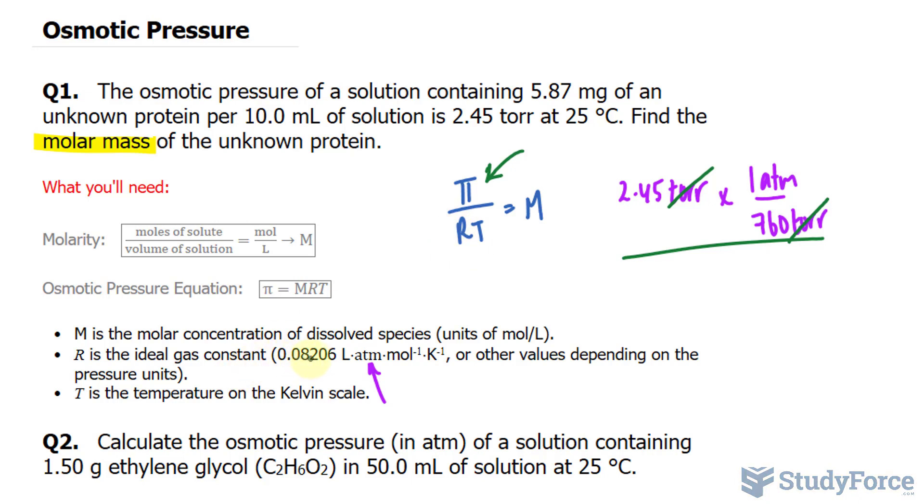r is 0.08206. You see this power of negative 1, that means we take the reciprocal of that unit, that's why it's at the bottom. And that's being multiplied to the temperature, which is 25 degrees Celsius, but we need to put that into Kelvin, so we add 273 to that, giving us 298 Kelvin. Notice that this unit and this unit will also cancel out. Eventually, the atmosphere units will cancel out, leaving us with moles per liter.